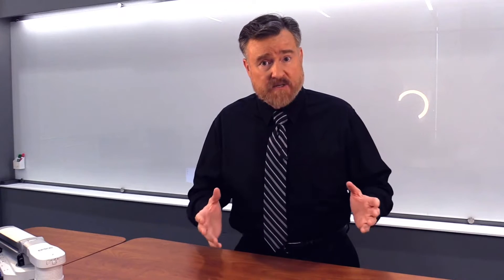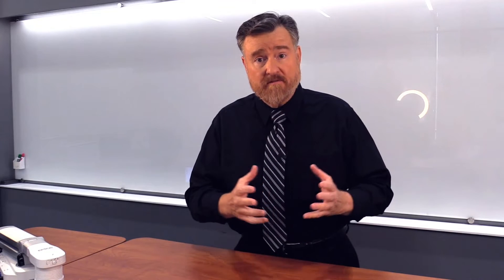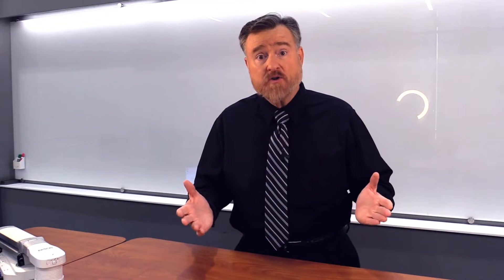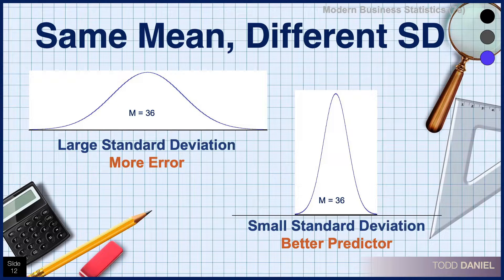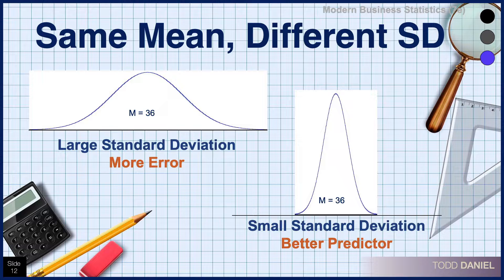The variability tells us about the spread of the data, how far apart or close together those scores are. When the standard deviation or variability is large, the mean is less informative — there's more error around that mean. However, when the standard deviation or variability is small, then all of the scores in that sample are very close to the mean, making that mean a much better predictor that we can use as a point estimator.